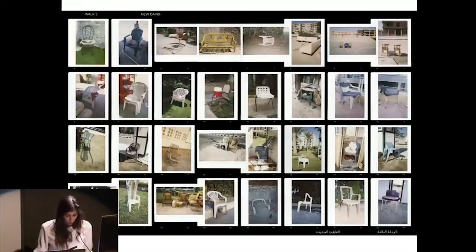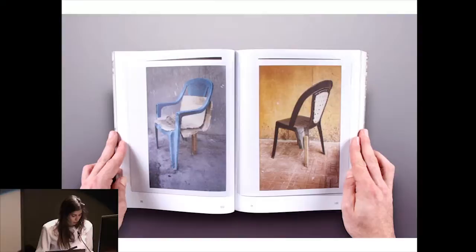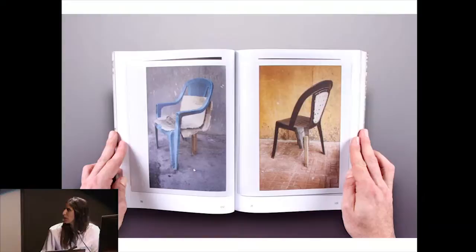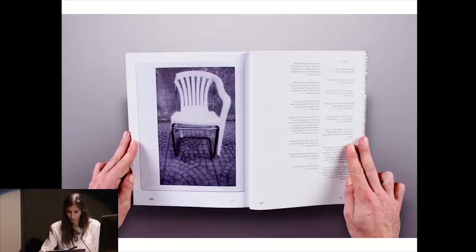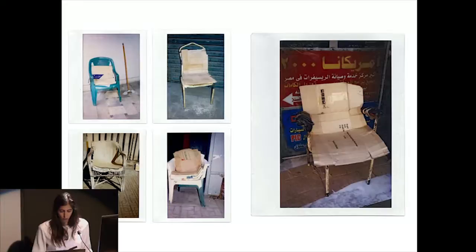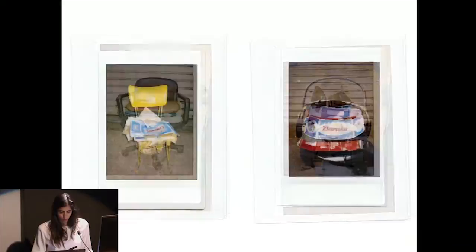Going through our images, we began to notice families of chairs. The thematic series of the book is organized around these families, which reveal common formal elements in the structure of chairs and shed light on the multiple ways they are utilized on the sidewalk. For example, one series shows different prostheses for amputated chairs — amputees with missing legs or back problems — and the different solutions made to reinforce them.